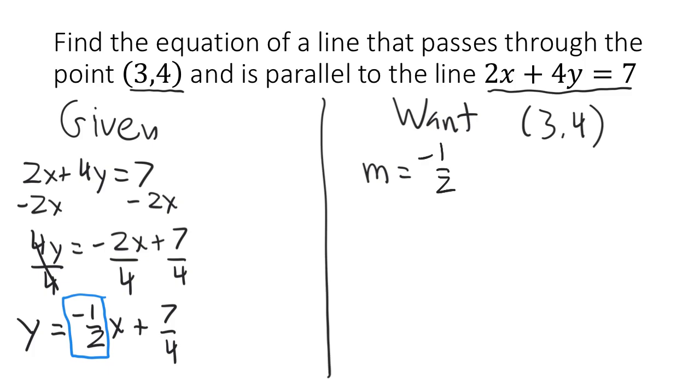Now we are ready to find the equation of the line we want. We can start with the point-slope form, y equals m times x minus x1 plus y1. And we can distribute the negative 1 half inside the parentheses, which gives us y equals negative 1 half x. Negative 1 half times positive 3 is plus 3 over 2.